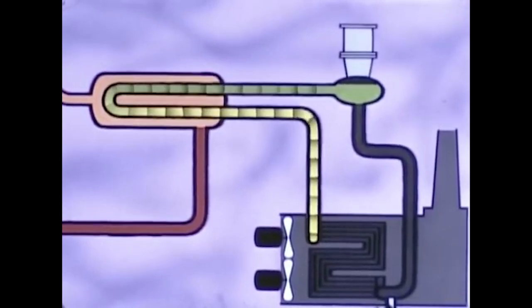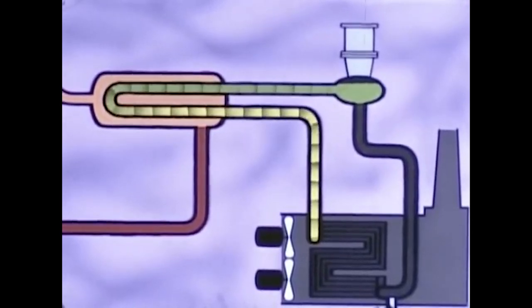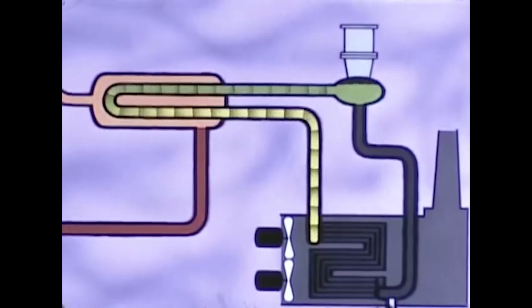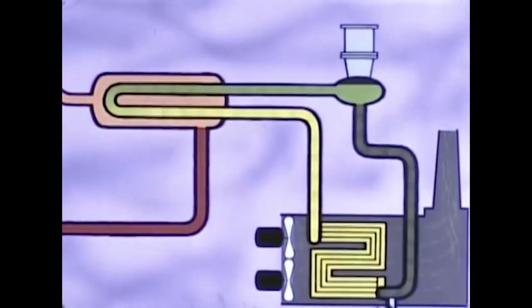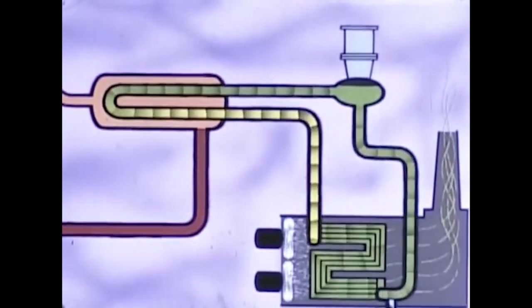Coolant salt is circulated through the heat exchanger and leaves at 1,070 degrees Fahrenheit. Heat from the coolant salt is transferred to air in the radiator. Cooling air is forced across the radiator and up the stack.